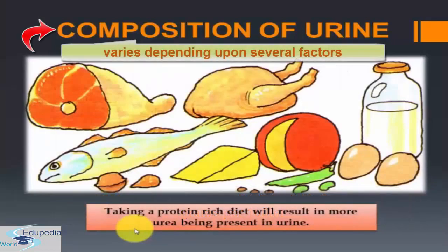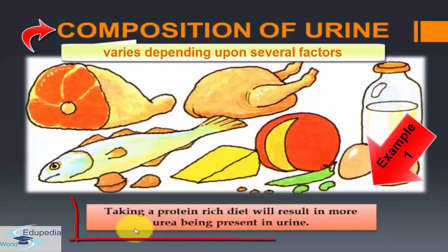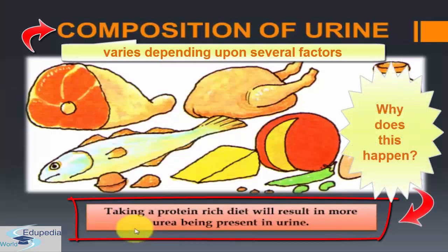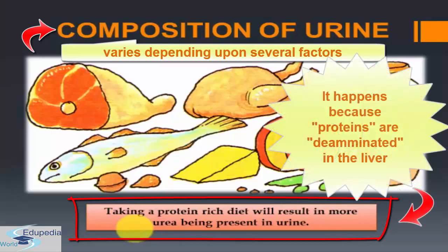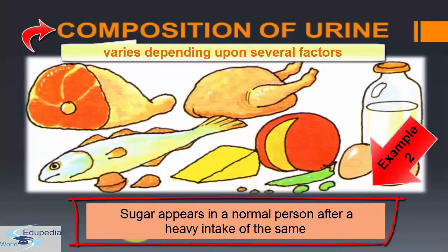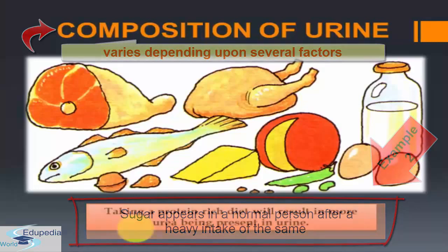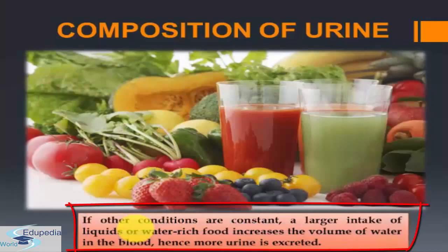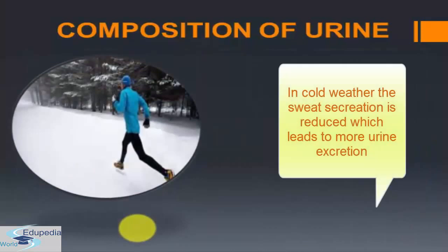However, the composition of urine varies considerably depending on several factors. For instance, taking a protein-rich diet will result in more urea being present in the urine. This is because proteins are deaminated in the liver with subsequent urea formation. Even sugar can appear in a normal person after a heavy intake. If other conditions are constant, a larger intake of liquids or water-rich food increases the volume of water in blood, hence more urine is excreted. This also happens in cold weather when sweat secretion is reduced.